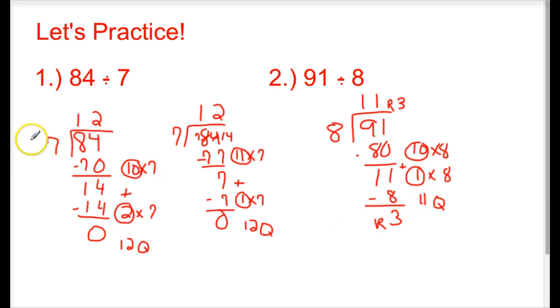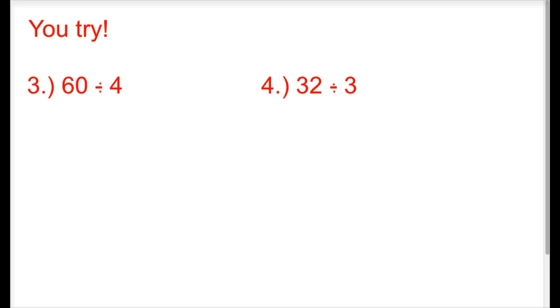And I have some more for you to try on your own. Two more problems for you to try on your own. Numbers 3 and 4. 60 divided by 4, 32 divided by 3. Work those out in your math journal. Make sure that you are paying attention to all the steps that you need to take. Go back and watch any of the other examples that I've done if you need to. And try your very best. Go on at Modo and let me know that you have watched the video.